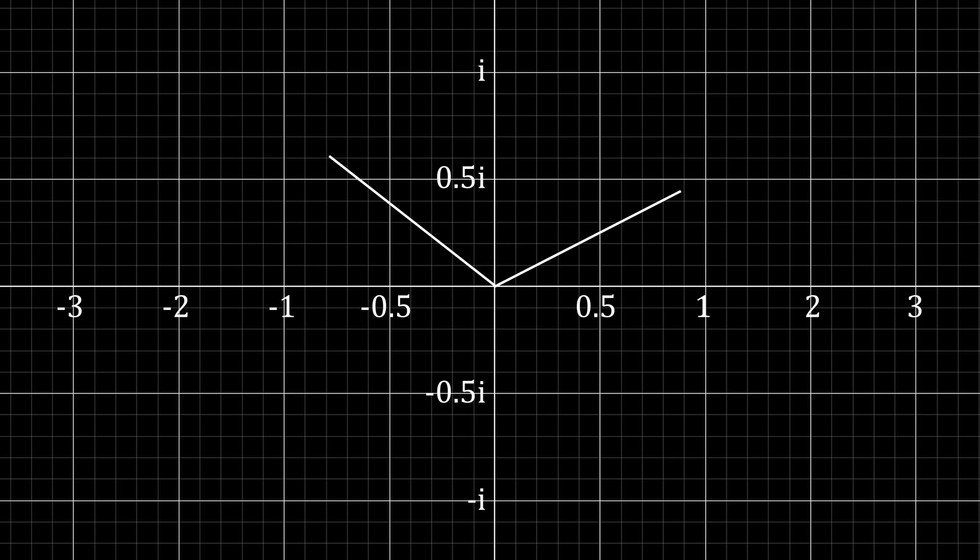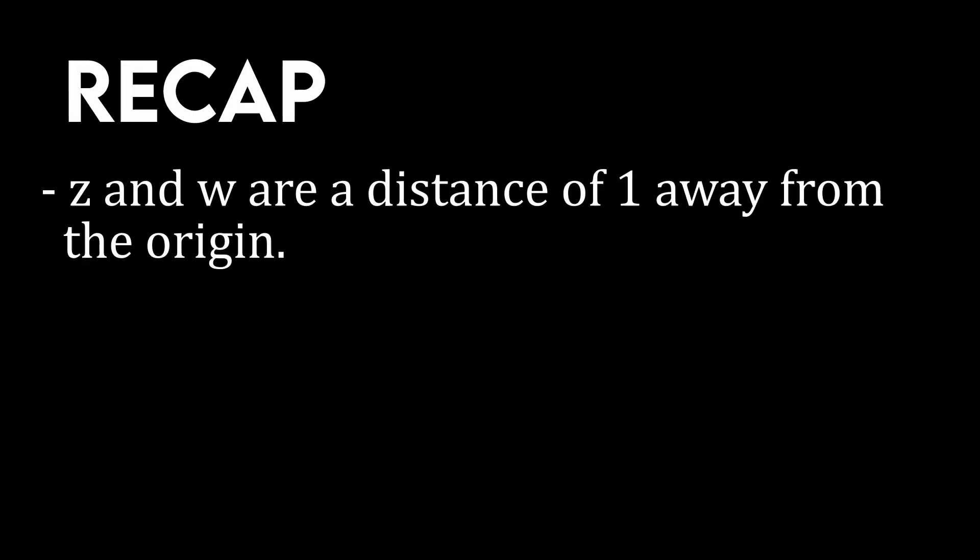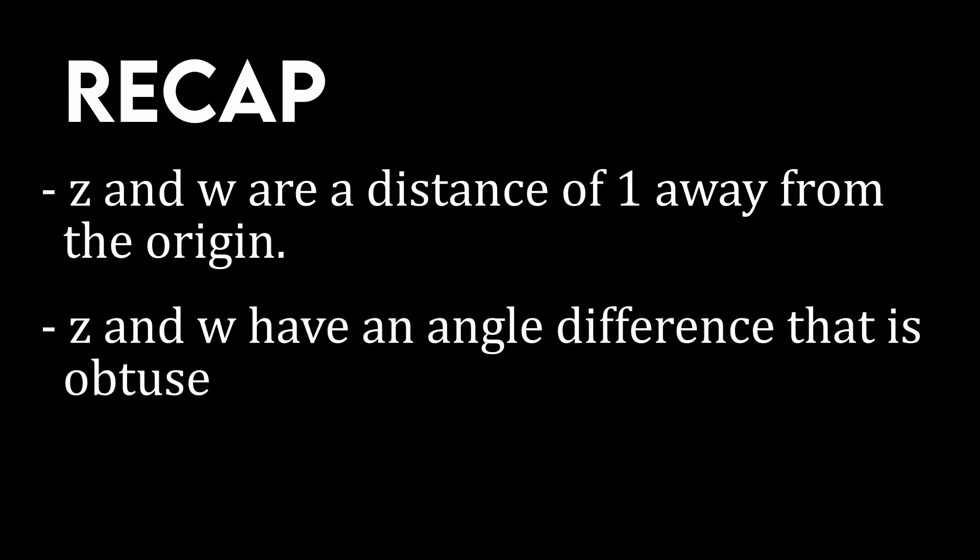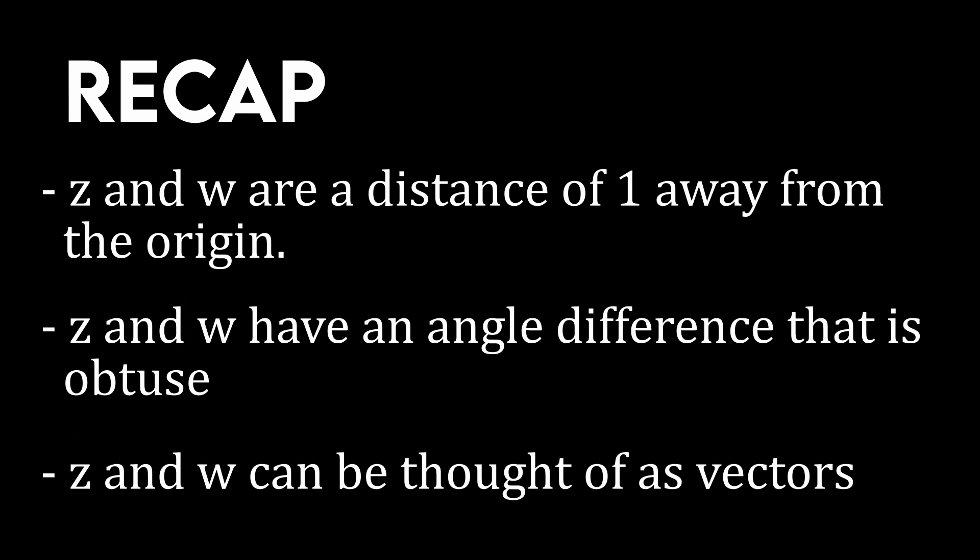Think of these two points as vectors, displaced up by its imaginary units and across by its real units. Let's pause and take all of that in. Z and w are a distance of 1 away from the origin. They have an angle difference that is obtuse. And both of these points can be thought of as vectors.